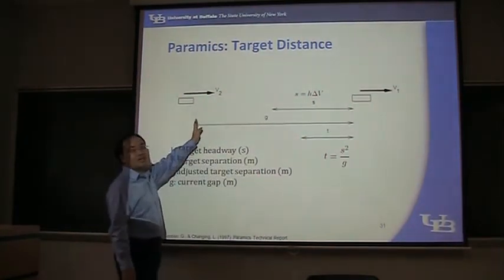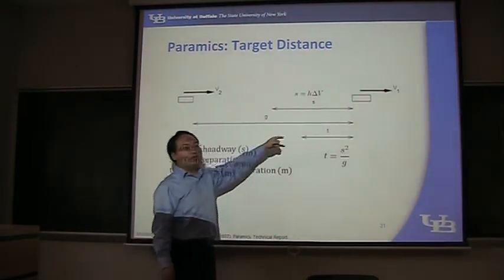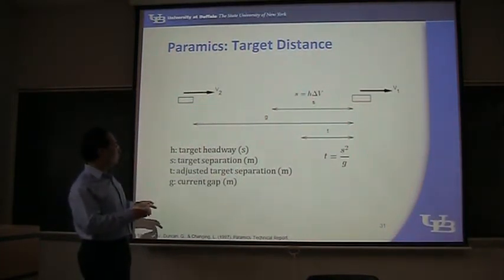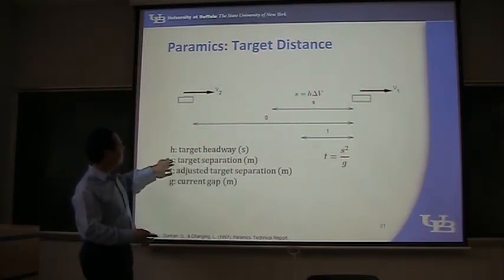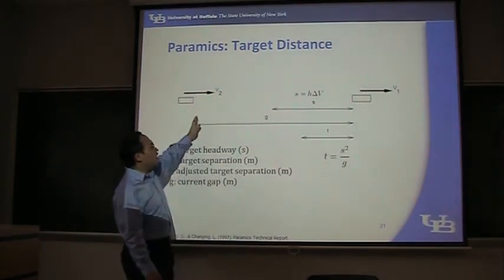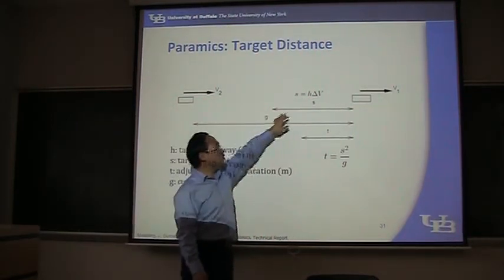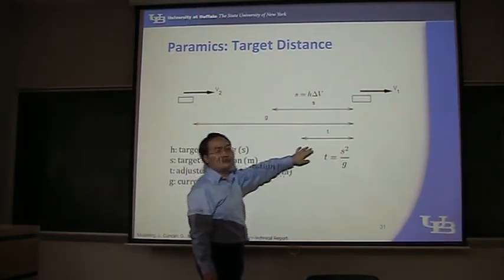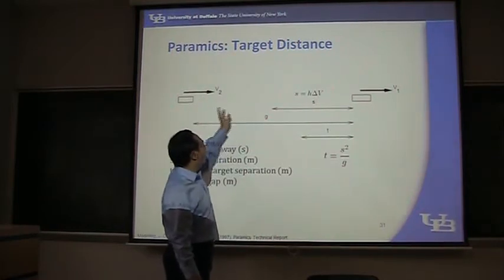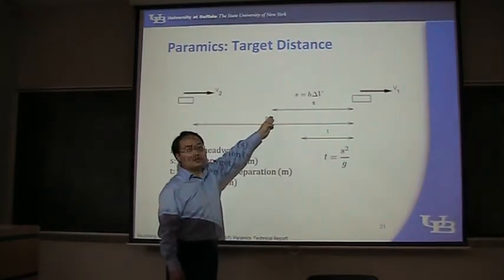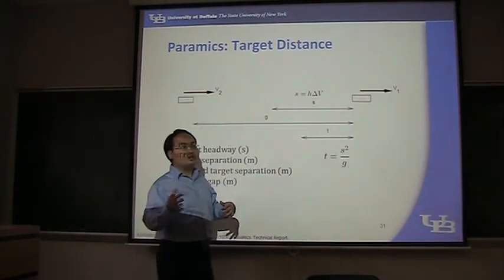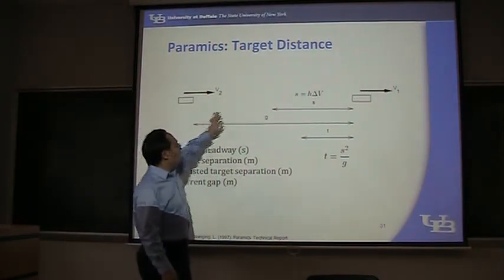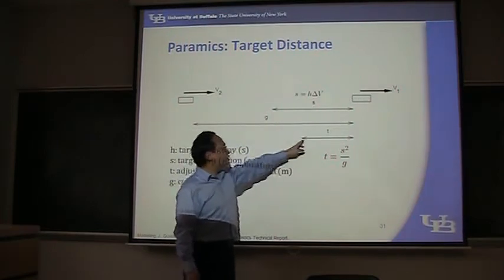But currently we have this gap G. In order to approach the leading vehicle, that vehicle is setting another target headway, or called adjusting target separation. So now it has this distance G, and it wants to approach this distance S. So it's targeted at this smaller distance called T. If it's only driving towards this position, because the vehicle in front may accelerate, their distance will get bigger and bigger. And that's why, although it wants to get distance S, they first aim for this smaller distance.